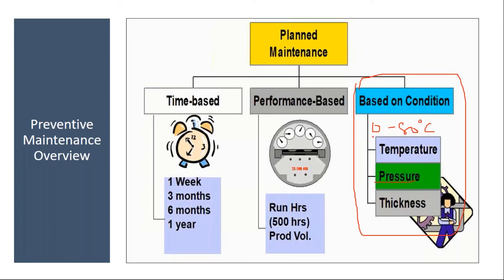Suppose they expect temperature between 0 to 80 degrees centigrade. Suddenly one day the temperature shows as 82 degrees — in that case, they will do preventive maintenance. The equipment is not having the required conditions, so they will go for condition-based preventive maintenance.